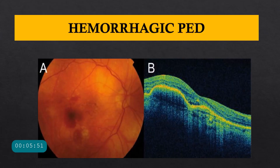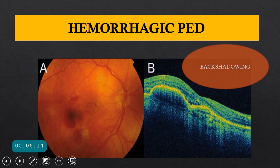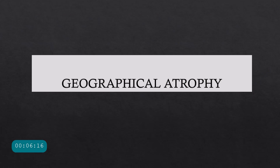A hemorrhagic PED looks similar — there will be irregular zones with hyper- and hyporeflective areas. What is more important is that blood does not allow light to pass through it, so you will see a shadowing effect — back shadowing — because of the blood present in the hemorrhagic PED.